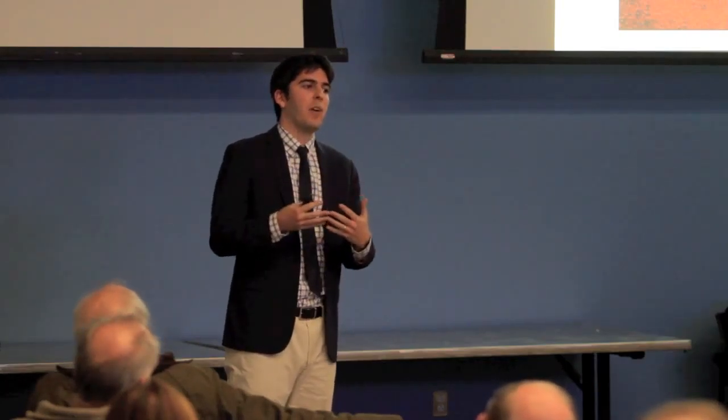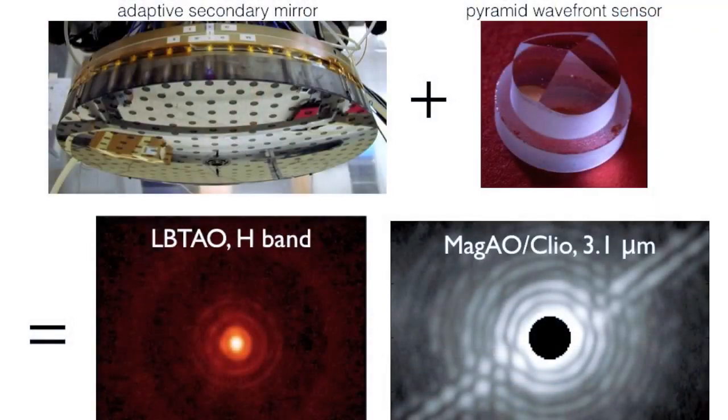So here's your secondary mirror, which is the thing that bends a thousand times a second to correct what the atmosphere is doing. We use this thing called a pyramid wavefront sensor, which is, there's only like four of them in the world. One guy can make them, and they're extremely important. They put the light in the right place for the computers to do the wavefront sensing, which is figuring out how distorted is the light, and then corrects for it using this pyramid wavefront sensor.